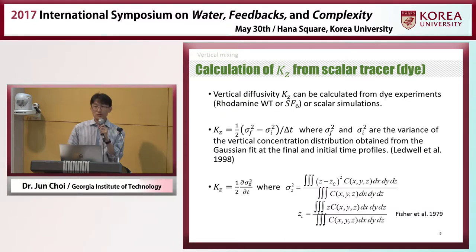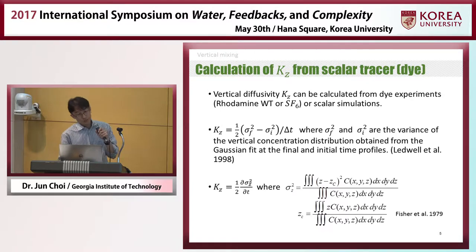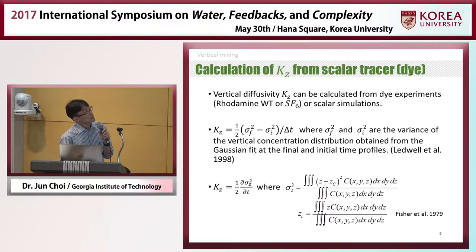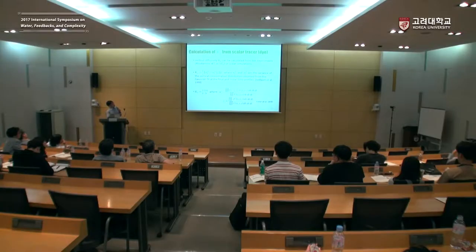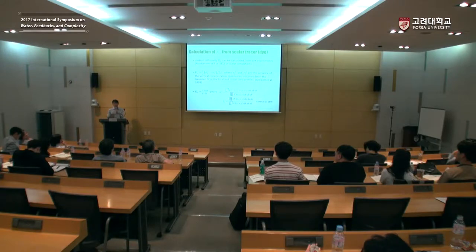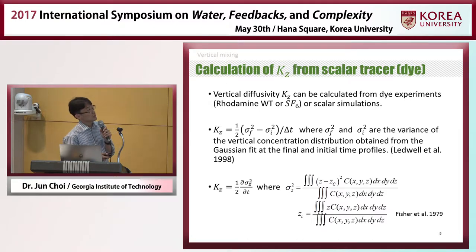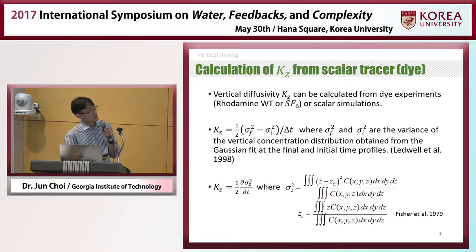Let's talk about vertical mixing parameterization. We can calculate vertical diffusivity Kz from dye experiments such as rhodamine WT or SF6, or from scalar simulations. You need two profiles: an initial concentration profile in the vertical direction and a final concentration profile. You can then calculate vertical diffusivity using the standard equation. If you run a scalar simulation, you have three-dimensional concentration and can calculate the variance using the second moment of that concentration, then easily calculate vertical diffusivity.